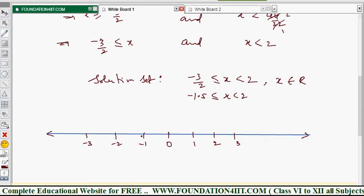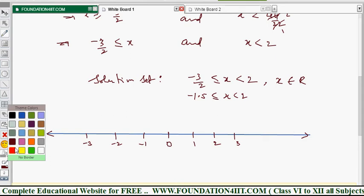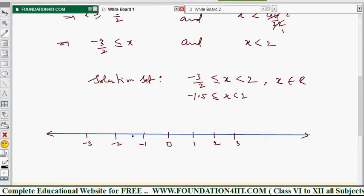Minus 1.5 is between minus 1 and minus 2. So we can represent here minus 1.5. Minus 1.5 is included, so it's a closed circle. But this 2 is not included, so x is less than 2. So 2 is just a circle drawn, it's open.